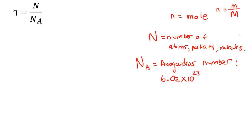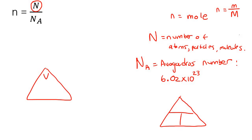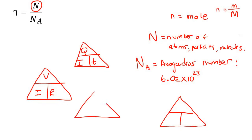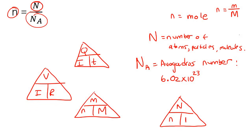Now I'm going to show you how to use this formula. Remember that these formulas can be used in different ways, so let's quickly make a triangle. You see how this capital N is at the top? So whenever we make a triangle — like in electricity you've got V, I, and R, or Q, I, and T — we put N at the top, and then the other two go on either side at the bottom.